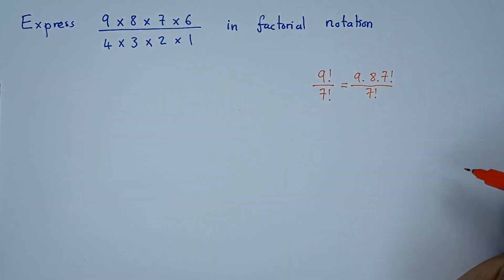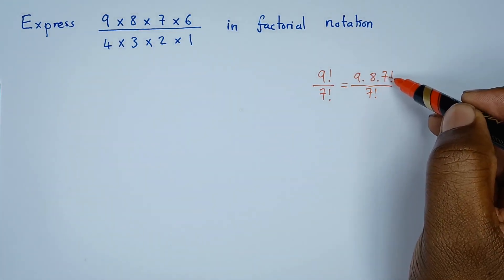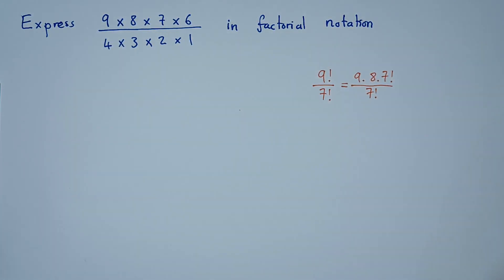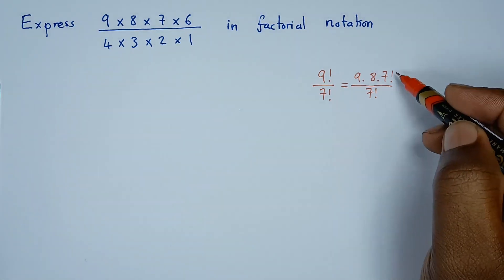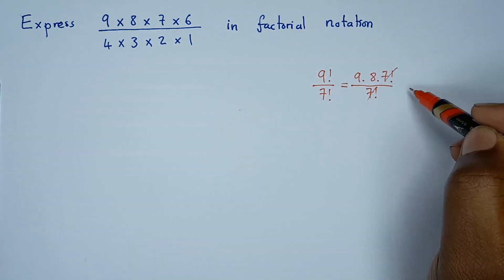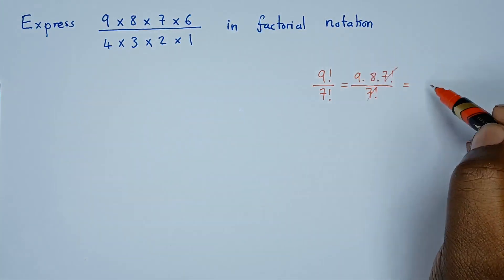Divided by 7 factorial. Remember, 7 factorial simply means it's going all the way down to 1. So the 7 factorial can cancel, leaving us with 9 times 8, which should give us 72.